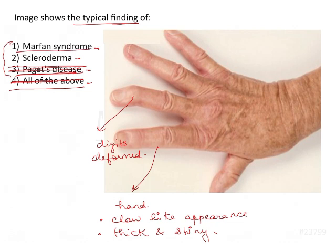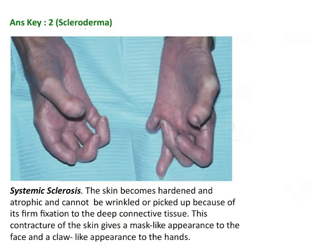That leaves us with Marfan syndrome and Scleroderma. We have very typical, classic hallmark features in Marfan syndrome. The claw-like hands are not a feature of Marfan — that is arachnodactyly, which will be shown subsequently in the explanation. These claw-like hands are very typical of scleroderma. The word 'derma' is also a giveaway because the skin is also affected along with the joint.